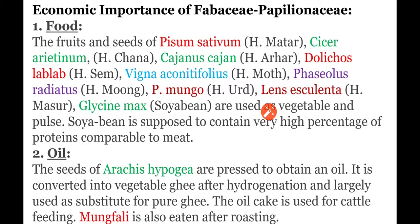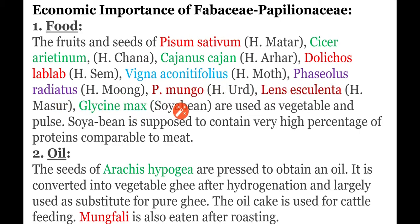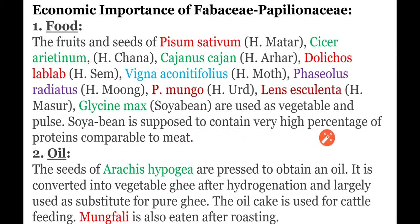First, in the food field, the fruits and seeds of Pisum sativum, Cicer arietinum, Cajanus cajan, Dolichos lablab, Vigna, Phaseolus radiatus, Phaseolus mungo, Lens esculenta, and Glycine max are used as vegetables and pulses.